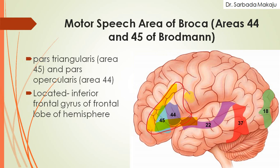One more function present in the frontal lobe is the motor speech area of Broca, which is area number 44 and area number 45. Area number 45 is known as the pars triangularis and area number 44 is known as the pars opercularis. It is located in the inferior frontal gyrus of the frontal lobe of the cerebral hemisphere.